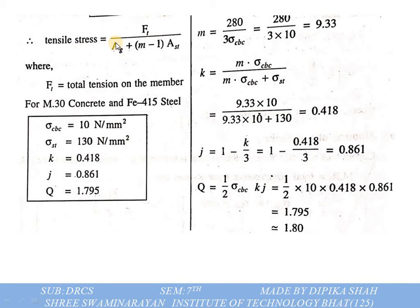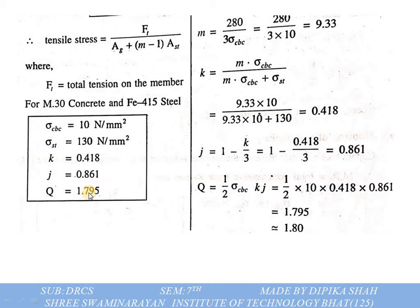For tensile stress in a water tank, the equation is: f_T / (A_G + (m−1) × A_ST), where F_T is the total tension on the member. For M30 concrete and Fe415 steel: sigma_CBC = 10 N/mm², sigma_ST = 130 N/mm², K = 0.418, J = 0.841, Q = 1.795.